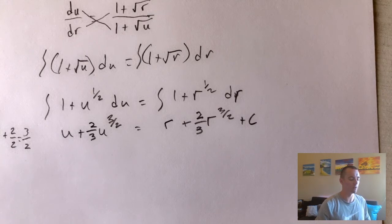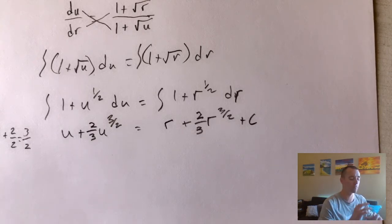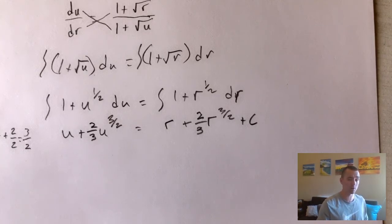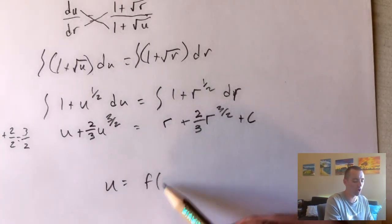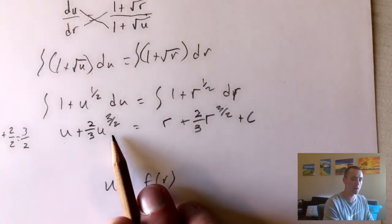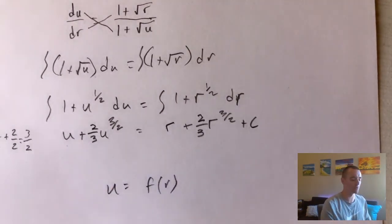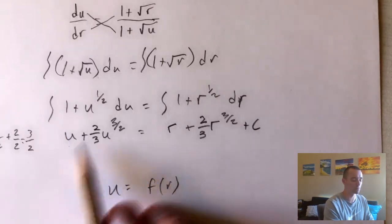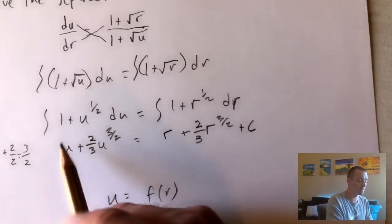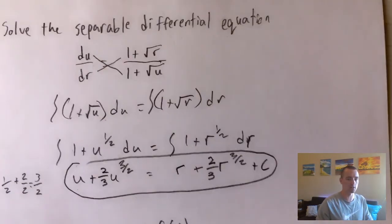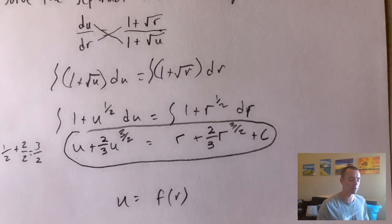This is actually a weird problem because typically with separable differential equations you want to get it into the form u equals a bunch of stuff with r — just solved for that one variable. But sometimes that's not actually possible, and this is one of those cases. There isn't a way to algebraically manipulate this equation so that we just have u equals some function of r, because we have both u and u to the three-halves. You'd hope to factor out all your u's, but that's not possible here. So this implicit form is actually the best we can do and is the solution to this separable differential equation. If we had an initial condition, we could solve for the plus C, but as given, this is the answer.